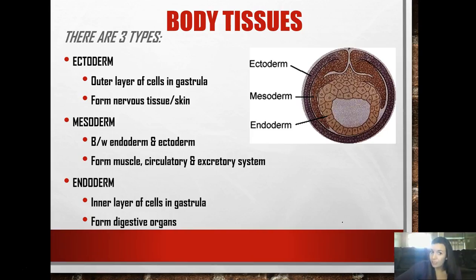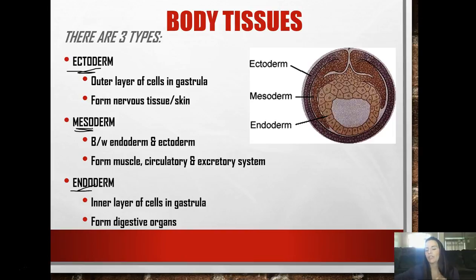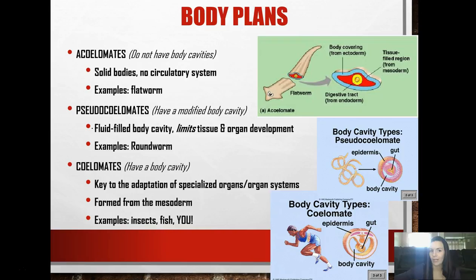There are three types of body tissues you should know: ectoderm, mesoderm, and endoderm. They're self-explanatory based on their prefix - ecto is out, endo is in, meso is middle. The ectoderm is the outer layer of cells and forms things like nervous tissue and skin. The mesoderm is between, and it forms muscle, circulatory, and the excretory system. The endoderm is the inner layer of cells, and this is what forms the digestive organs.